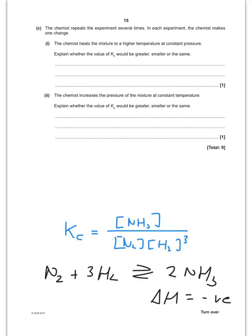So just down the bottom here, I've rewritten Kc and also the equilibrium equation just to help us with this bit. So the chemist heats a mixture to a higher temperature at constant pressure. What would happen to Kc? Well, if I heat the mixture, it's an exothermic reaction. So the equilibrium will be shifted to the left-hand side. So this will get larger and this will get smaller, and so Kc will get smaller because the forward reaction is exothermic.